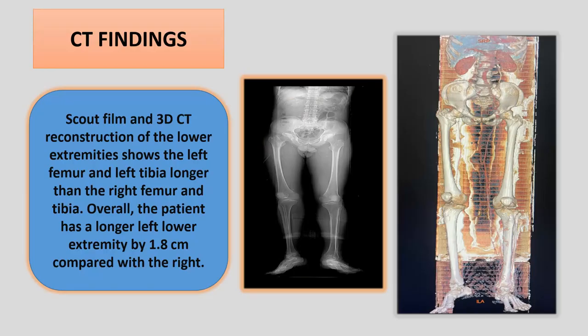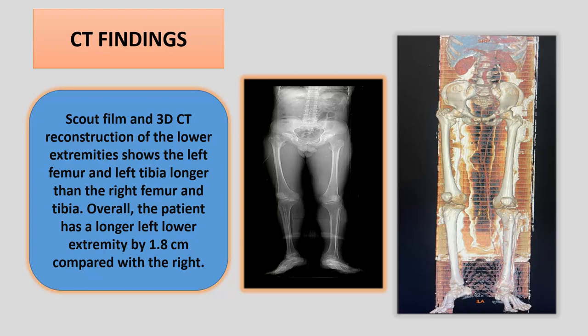The patient was then subjected to CT scan. The findings on the scout film and the 3D CT reconstruction of the lower extremities showed the left femur and left tibia longer than the right femur and tibia. Overall, the patient had a longer left lower extremity by 1.8 cm as compared to the right.